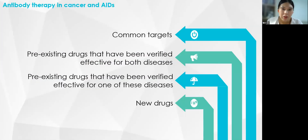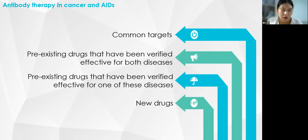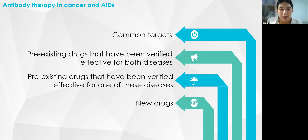In summary, when we encounter a patient with cancer and an autoimmune disease, we need to look for the common target and thus identify existing drugs approved for both diseases, or existing drugs approved for one of the two diseases that may also treat the other. Finally, there is the discovery of new drugs.